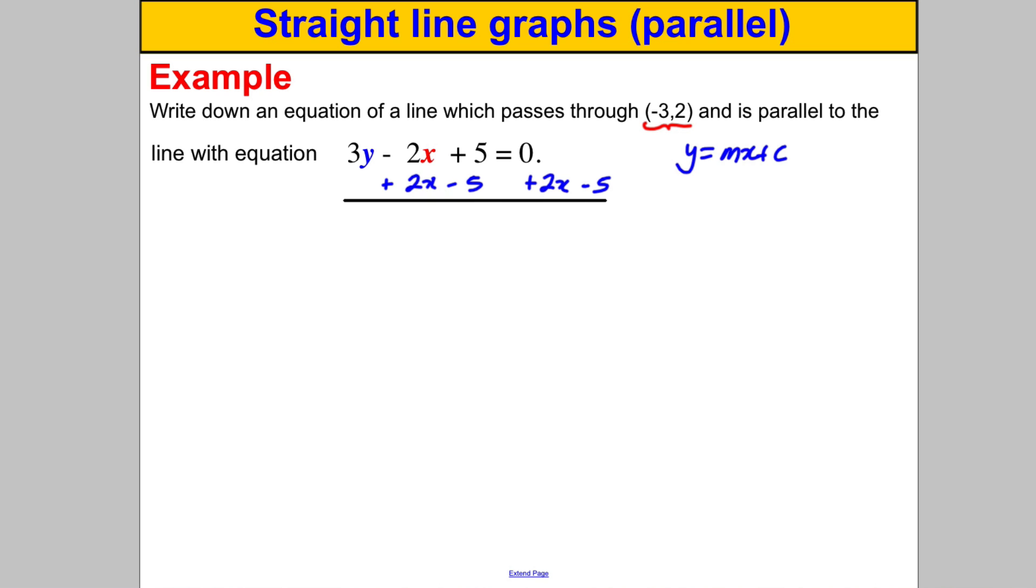Currently we've got 3y, so this would give us 3y would equal 2x subtract 5. Remember we want Y on its own, so we need to divide everything through by 3, and we'd get ourselves Y is therefore 2 divided by 3, I'll write as 2 thirds x, subtract 5 divided by 3, I'll write like that.